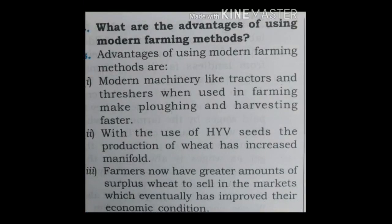Question 5: What are the advantages of using modern farming methods? Modern machinery like tractors and threshers make ploughing and harvesting faster. With the use of HYV seeds, the production of wheat has increased manifold. Farmers now have greater amounts of surplus wheat to sell in the markets, which has eventually improved their economic condition.